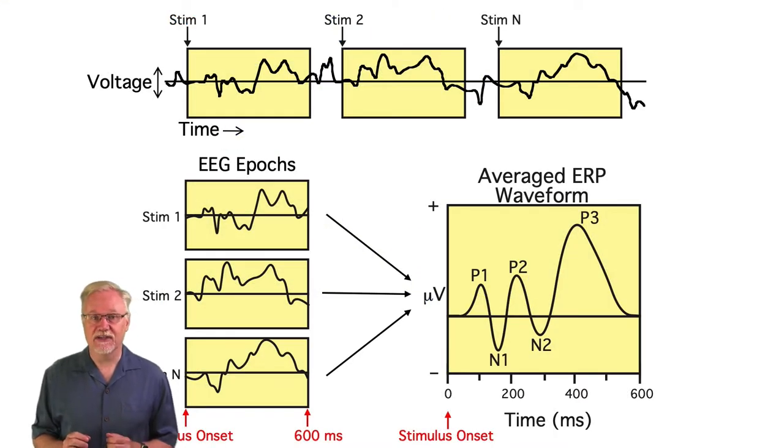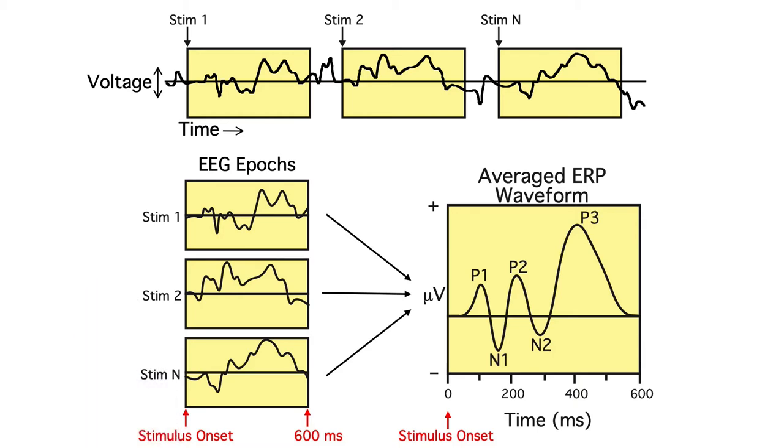We use signal averaging to deal with these random fluctuations. The more trials we have, the more random activity we'll average out, leaving us with a beautiful ERP waveform. But this leads to an important question.